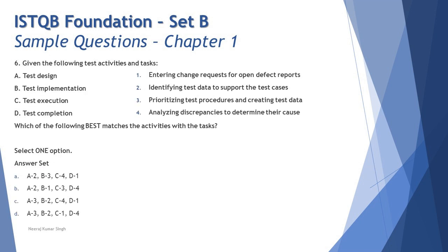Question number six — I call it the most complicated question because if you don't remember one thing, they give you many to answer. It's about the test process and its activities. The question says: given the following test activities and tasks, match them — how A, B, C, D match with 1, 2, 3, 4. A wonderful tip for match-the-following questions is to start with the option you are 100% sure about.